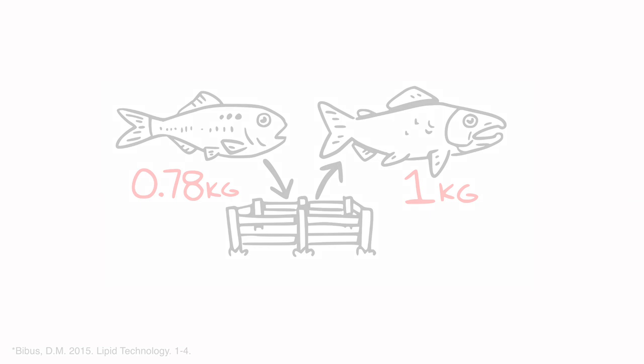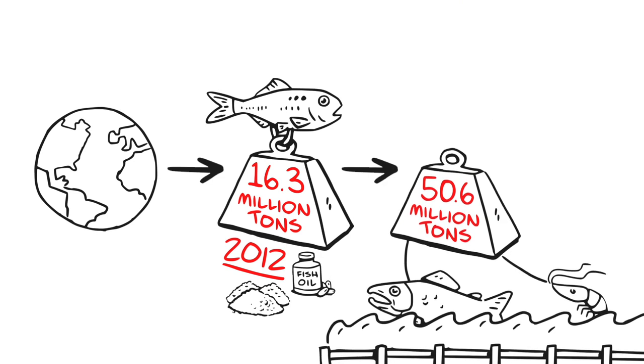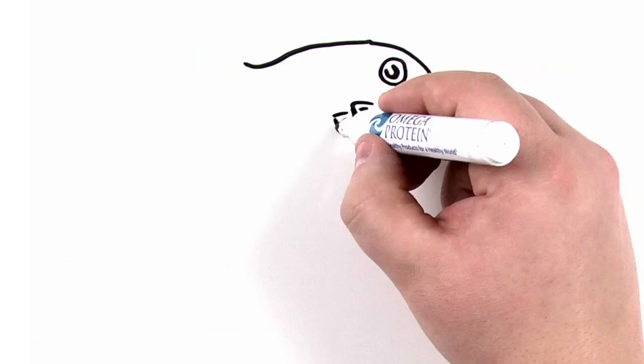On a global scale, 16.3 million tons of fish were harvested for fish meal and oil in 2012. In the same year, aquaculture produced 50.6 million tons of fish and shrimp. Thus, one unit of wild fish helps support the production of three units of farmed fish and shrimp.